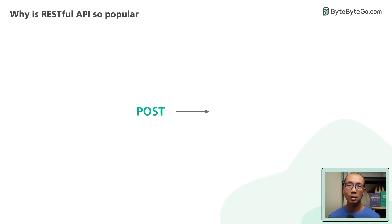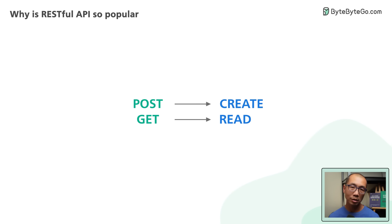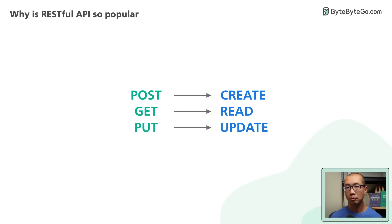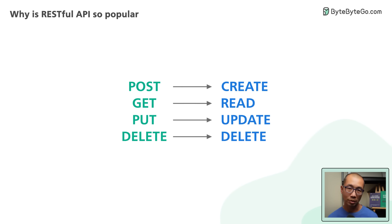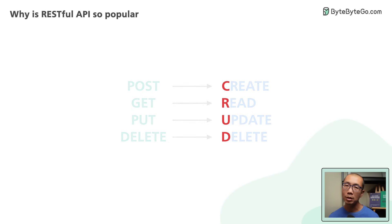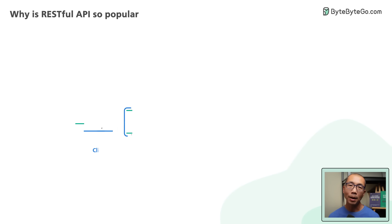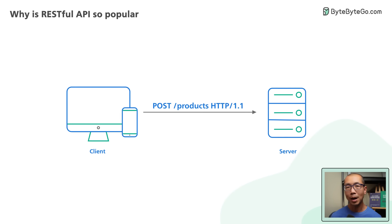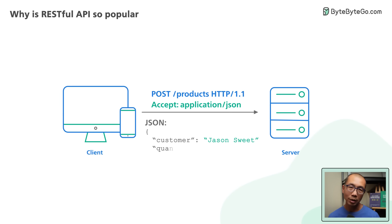A POST request means we want to create a new resource. GET means we want to read data about an existing resource. PUT is for updating an existing resource. DELETE is for removing an existing resource. You might have heard the acronym CRUD — that is what it stands for. In the body of these requests, there could be an optional HTTP request body containing a custom payload of data, usually encoded in JSON.